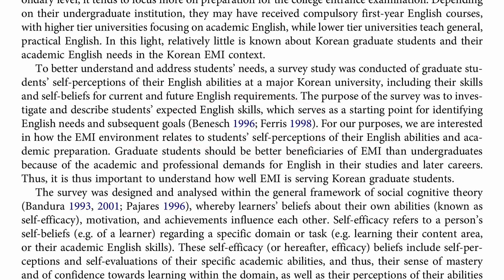Here I've got two different sources cited: Bandura 1993, comma 2001. So I'm citing two different sources by Bandura — his 1993 article and his 2001 article. And then another author, Pajares 1996, with a semicolon. I'm citing them in Chicago in terms of order of importance. Bandura 1993, 2001 — same author, in chronological order. And then of secondary or lesser importance is the Pajares 1996 article.